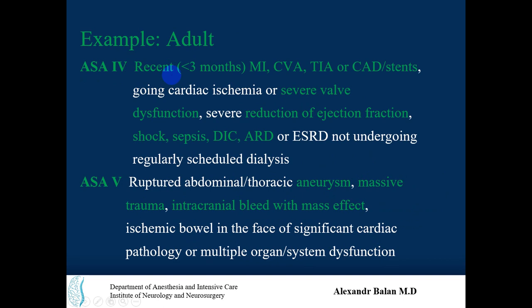ASA 4 is for patients with recent events less than 3 months prior: myocardial infarction, cerebrovascular accident, transient ischemic attack, or coronary artery disease with or without stent placement. Also included are patients with ongoing cardiac ischemia, severe valve dysfunction or replacement, severe reduction in ejection fraction, shock, sepsis, multiple organ dysfunction, disseminated intravascular coagulation, acute respiratory disorder, or acute or end-stage renal disease not undergoing regularly scheduled dialysis. Everything in ASA 4 is severe, indicating a terminal or decompensated patient.